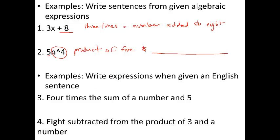Examples now doing the opposite. So write an expression when given an English sentence. 4 times the sum of a number and 5. So it's a product, 4 times something. And what are we multiplying by? We're multiplying the sum, which is adding a number and 5. So a number might be x, and we're adding it to 5. So 4 times the sum, here's our sum, of a number and 5.